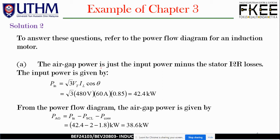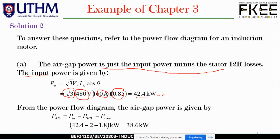Solution for Example 2, part (a): The air gap power equals input power minus stator copper losses. The input power is: P_in = √3 · V_T · I_L · cos θ = √3 × 480 × 60 × 0.85, giving P_in ≈ 42.4 kW. Then P_AG = P_in - P_SCL - P_core = 42.4 - 2 - 1.8 = 38.6 kW.